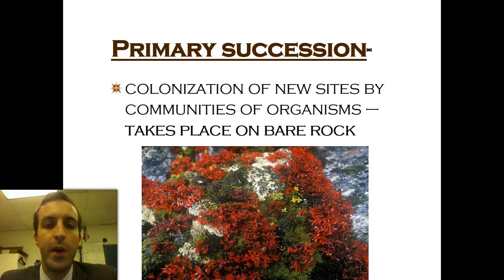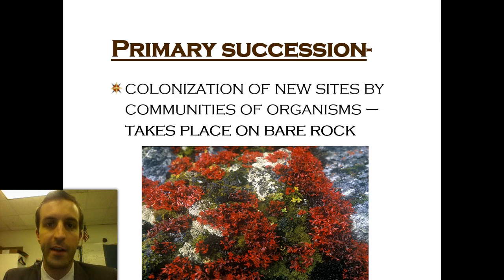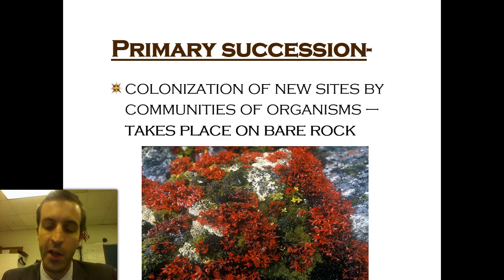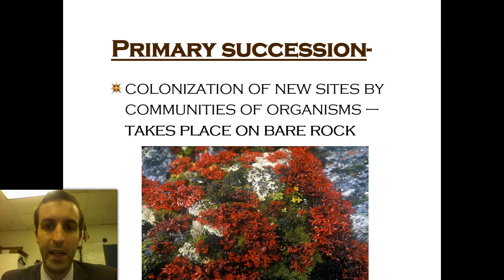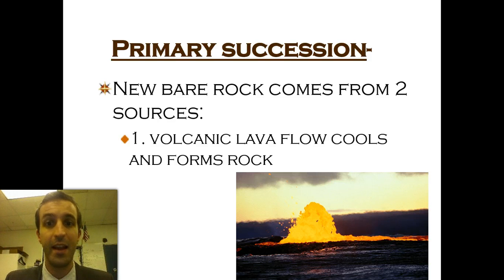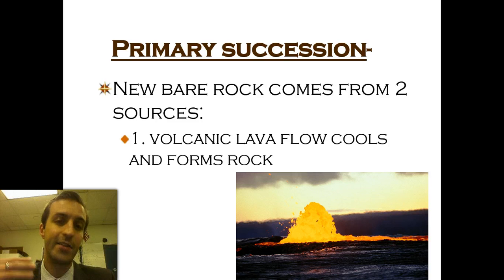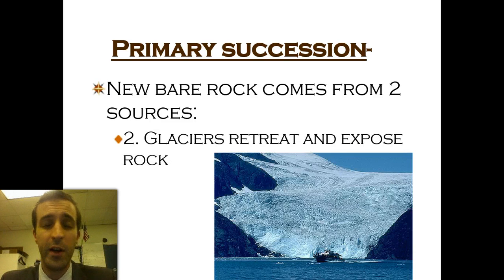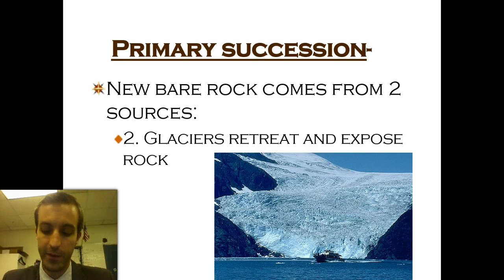Now there are two kinds of succession. First you have what's called primary succession, and this is what happens when you're starting from bare rock. There are really only two times where you see complete primary succession. The first one is volcanoes — a big volcano erupts, lava flows down into the ocean or down the mountainside, kills off everything and makes brand new rock, so you're starting literally from nothing. You can also have it when glaciers move out of the way and leave nothing but rock behind.